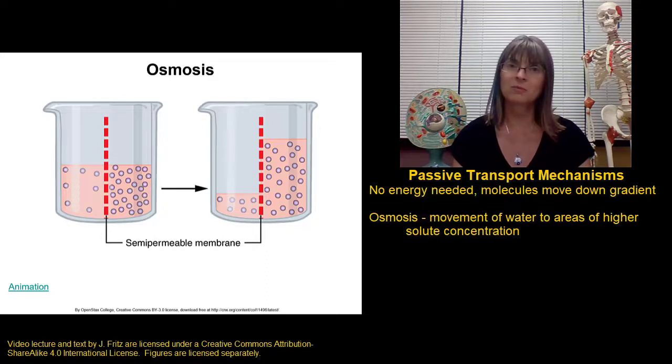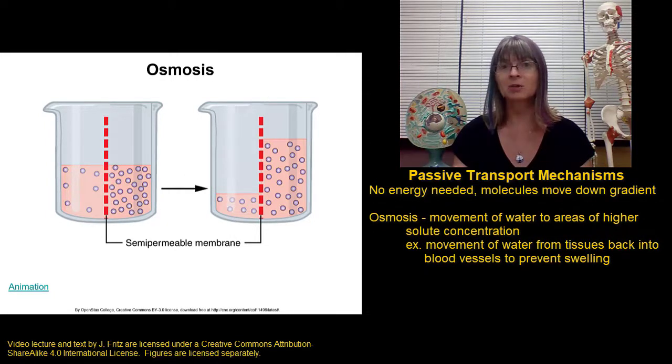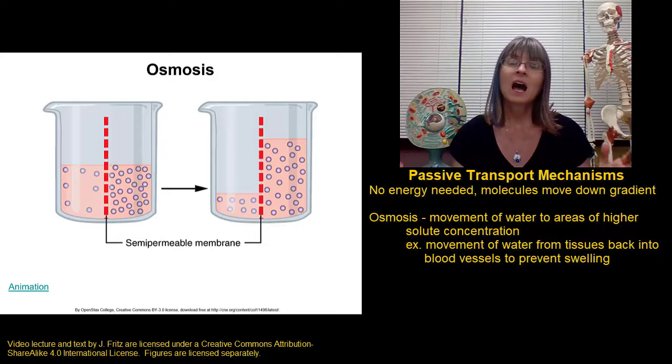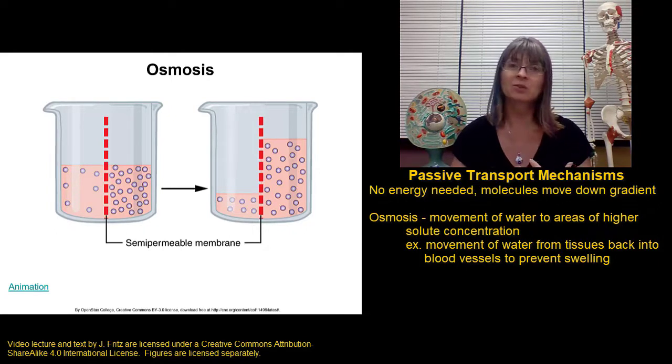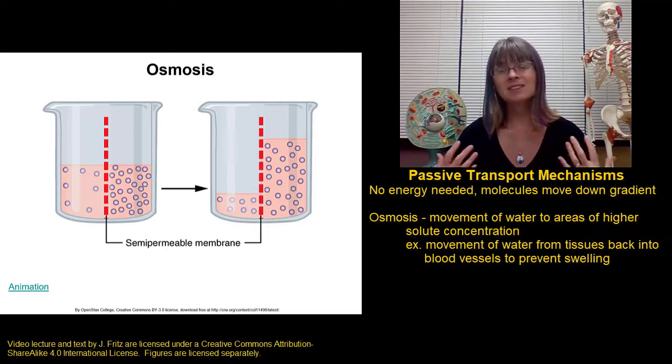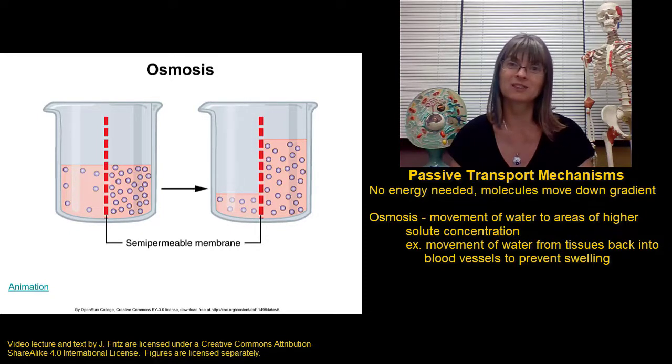Osmosis is really important for a number of body functions. For example, water and small molecules are pushed out of your blood vessels by your blood pressure. So the push of the blood through your vessels pushes water and small molecules out into your tissues. Osmosis pulls water from your tissues back into the blood vessels again. That's because there's all that solute, all those things left in the blood, that attract water back into the blood vessels. This is important to keep us from getting a lot of swelling or edema from lots of extra fluid left over in our tissues. Osmosis pulling water back into the blood vessels.